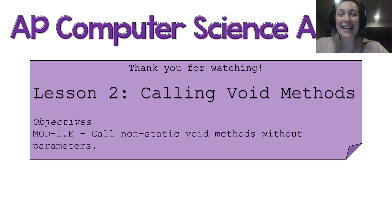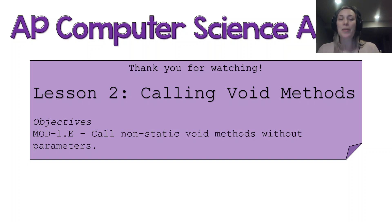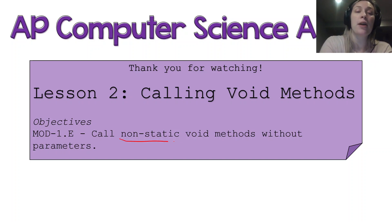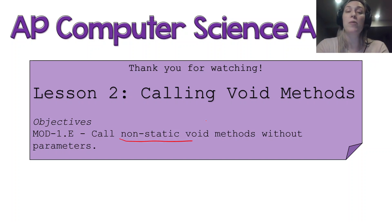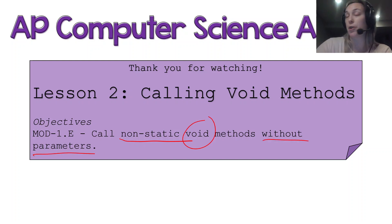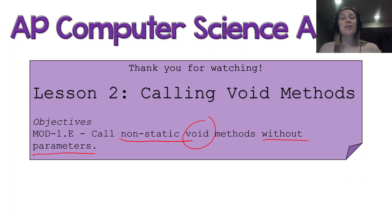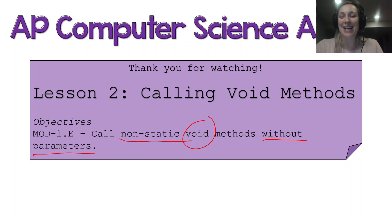And that is the end of the lesson — calling non-static void methods without parameters. Non-static means they work on objects, void means no return value, and we had open/close parentheses with no parameter list. That wraps up our computer science lesson. Thank you for following along and I'll see you next time.